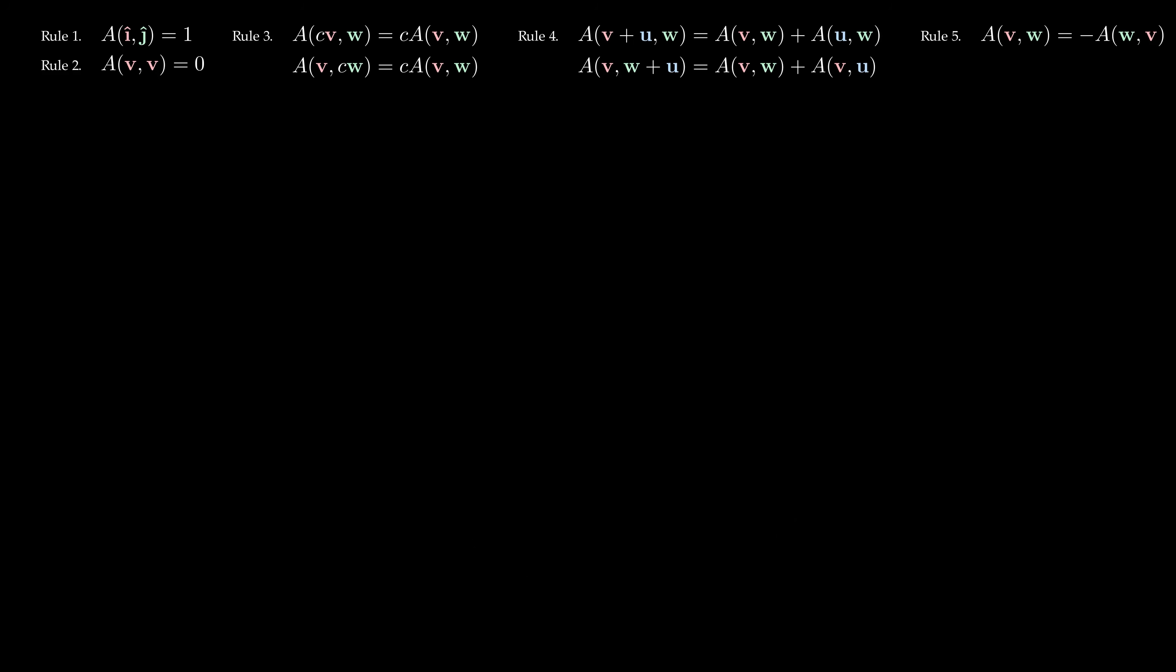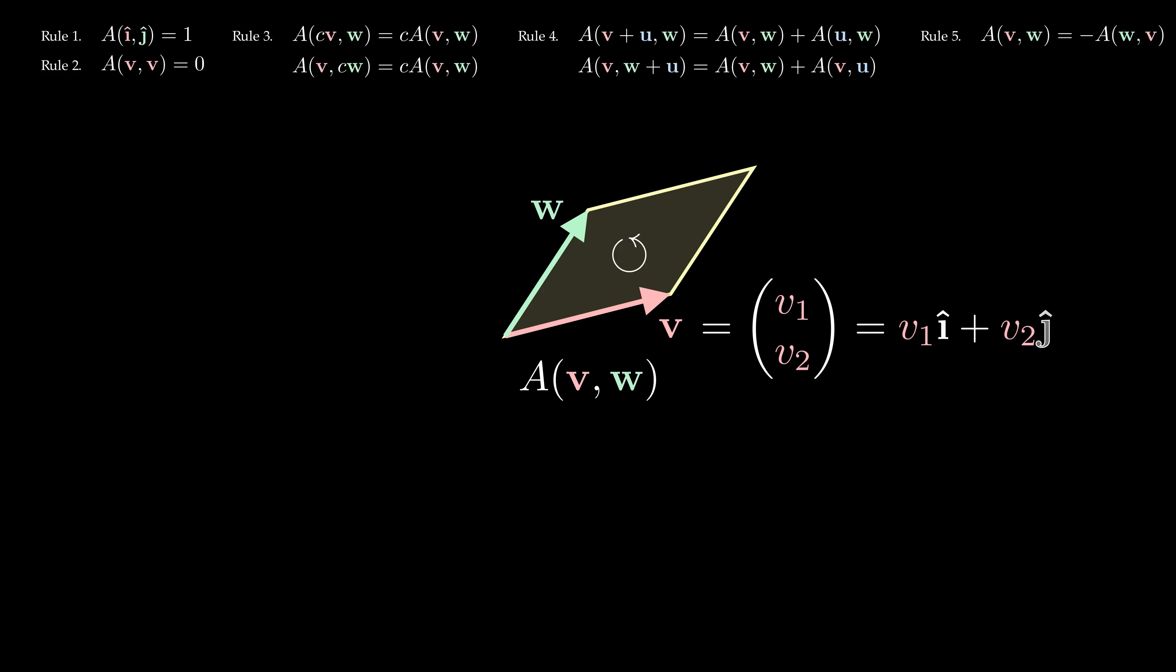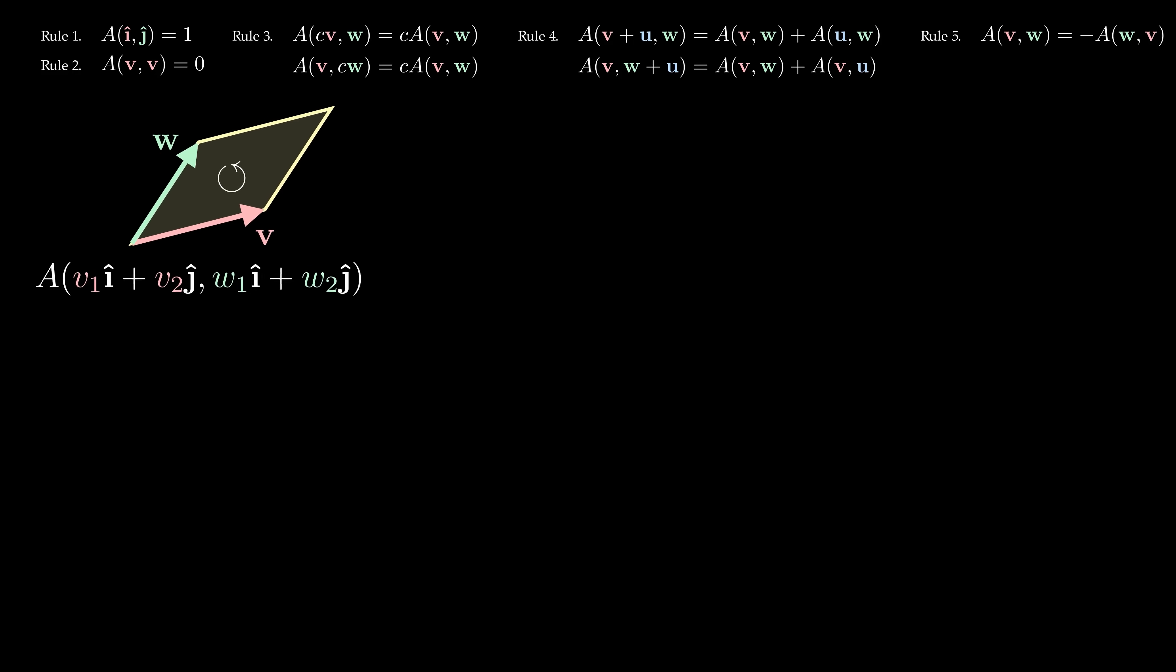So we know all these rules now, but so what? We still don't know how to actually calculate the area of a parallelogram. Or do we? Let's start by writing v and w in coordinates, using the basis vectors i hat and j hat.